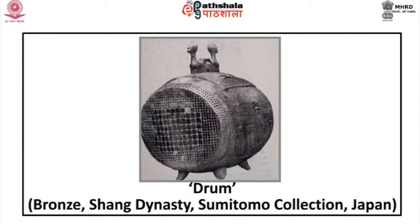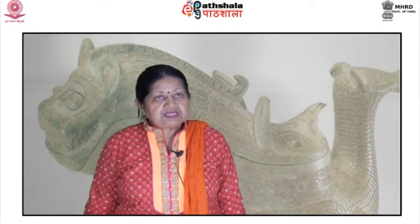Below on the axe is the second important element of Shang decoration: the kui dragon, a single-legged creature with horns, fangs, teeth, and usually a gaping mouth. From the evidence of hundreds of decapitated human figures buried at Anyang, we may conclude that an axe of this size and type was used for human sacrifice. A drum, made of bronze, belongs to the Shang dynasty and is now in the Sumitomo Collection, Japan.